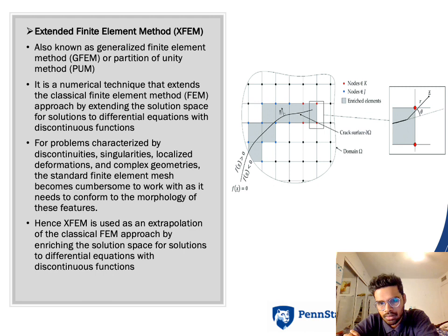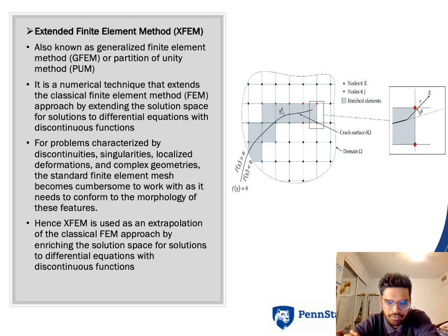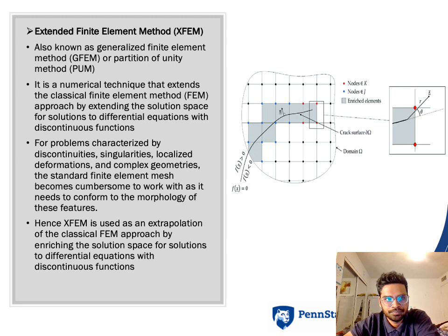Why do we go for XFEM? When you consider the finite element method, whenever we encounter discontinuities such as singularities, localized deformations, fractures, cracks, or complex geometries, we need to go for remeshing every time. But with XFEM, it tries to cheat the system and allows mesh manipulation. It also adjusts the approximation space by incorporating enriched nodes or enrichment functions across the discontinuity, so that there is no need for mesh refinement.